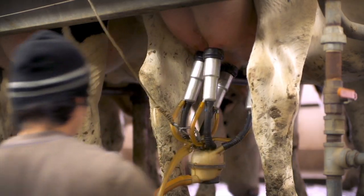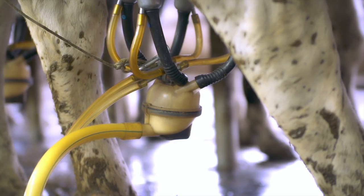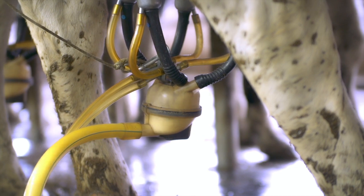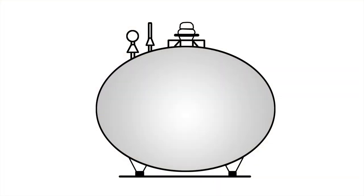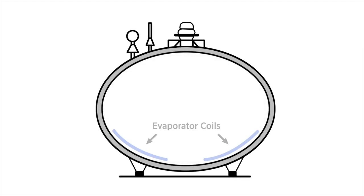Milk leaves the cow at around 101 degrees and must be quickly cooled to around 38 degrees using the bulk tank's refrigeration system. The standard compressor-based system circulates liquid refrigerant through evaporator coils in the bulk tank.